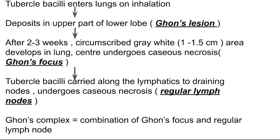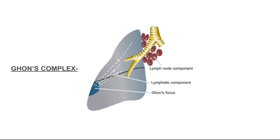From the Ghon's focus, the tubercle bacilli are carried along the lymphatics through the draining lymph nodes, where they also create infection and undergo caseating necrosis. So the Ghon's complex is the Ghon's focus along with the hilar lymph nodes which got infected by the tubercle bacilli.